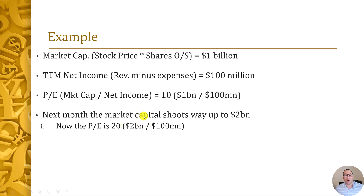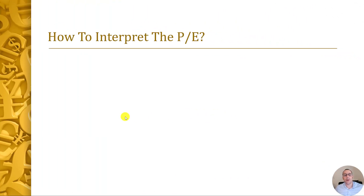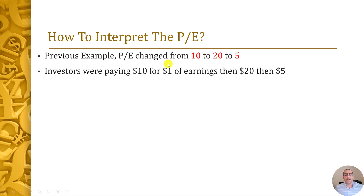So the new PE is $2 billion over $100 million. Now let's say the following month the stock crashes and it's down to $500 million market cap — it's half of what it was originally. Now the PE is 5, it seems really undervalued: $500 million over $100 million. Investors are paying $5 for one dollar of earnings, so it seems like a great deal. But the PE is just one number. On the previous page, the PE changed from 10 to 20 to 5. An investor was willing to pay $10, then $20, then $5 for one dollar of earnings.